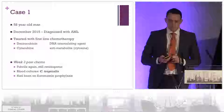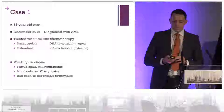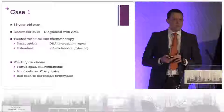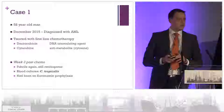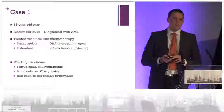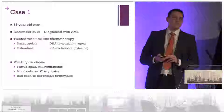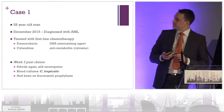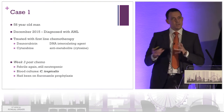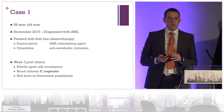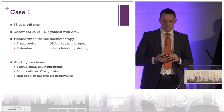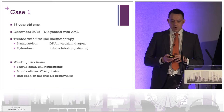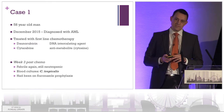At week three, he's taken a while to recover his counts. He's still febrile, still neutropenic, and this time his blood culture has grown a Candida tropicalis. The interesting thing is that we don't use mould-active antifungal prophylaxis, so he has been on fluconazole prophylaxis during his chemotherapy. This is a Candida tropicalis on the back of fluconazole prophylaxis.